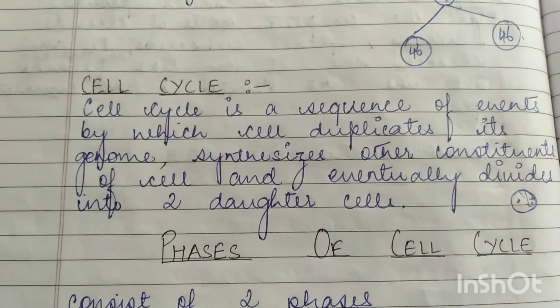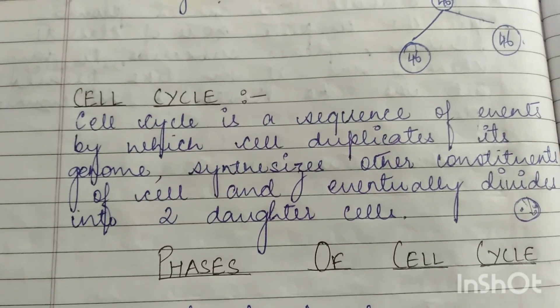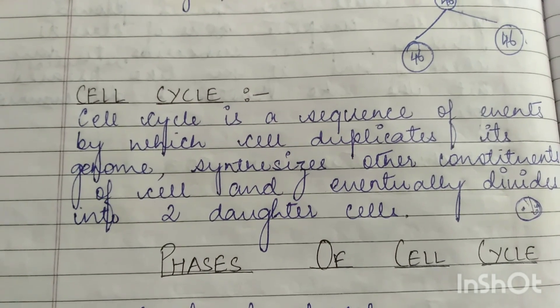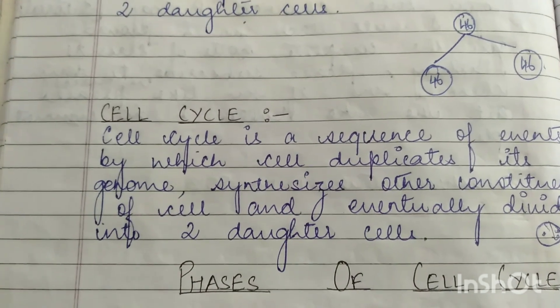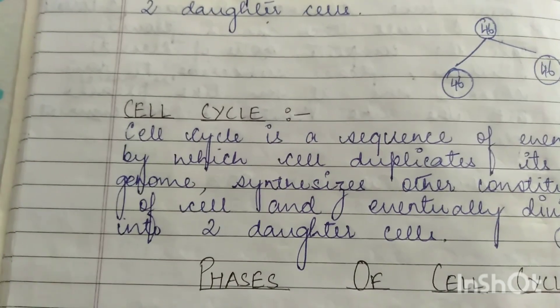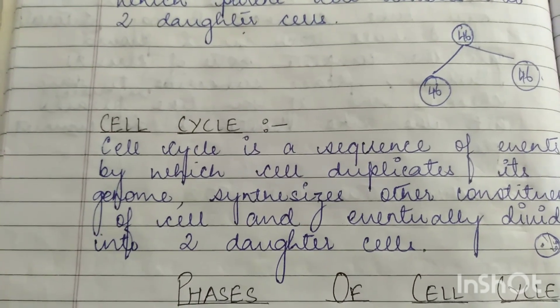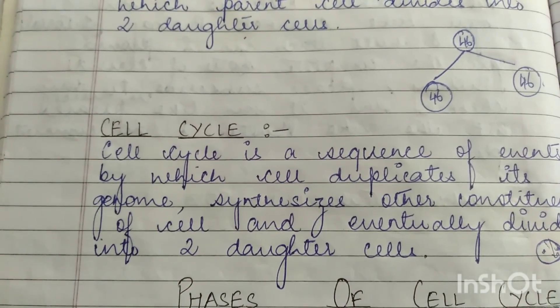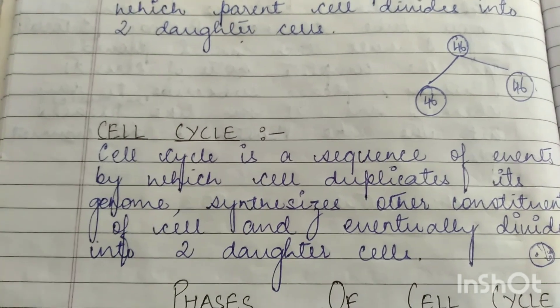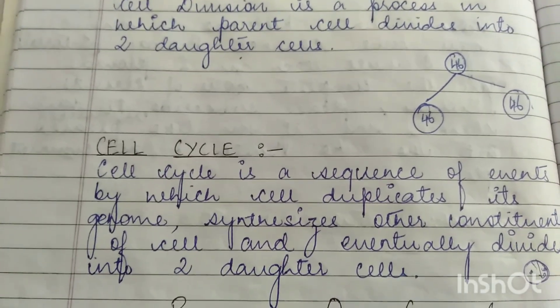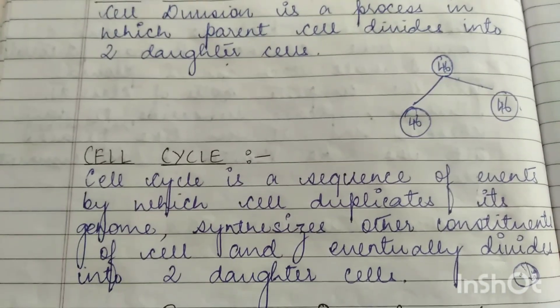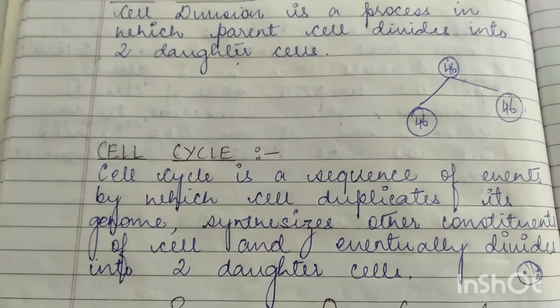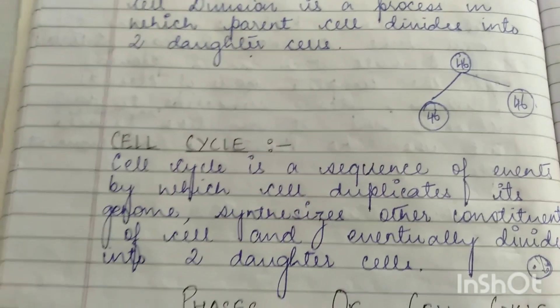Cell cycle is a sequence of events by which a cell duplicates the genome, synthesizes other constituents of the cell, and eventually divides into two daughter cells. The cell cycle is a complete cycle divided into four phases: G1, S, G2, and M phase. In one phase the cell prepares for the next phase — it is a complete cycle leading to the duplication of the genome, synthesizing other cell constituents, and finally in the last phase the division into two daughter cells takes place.